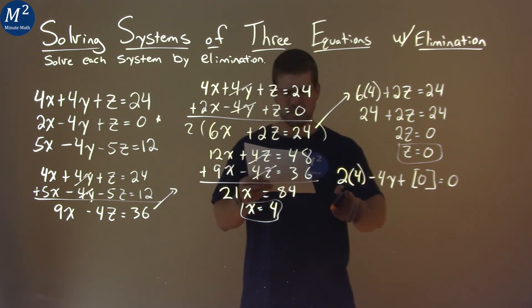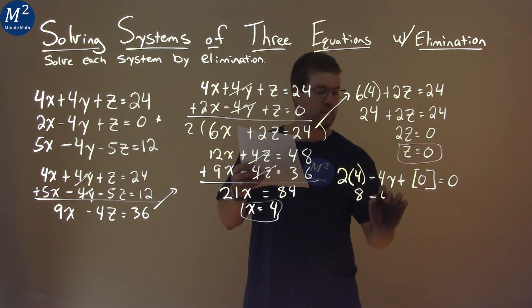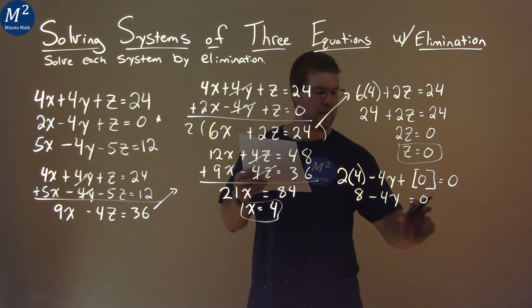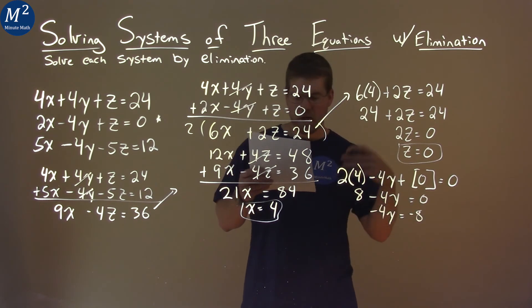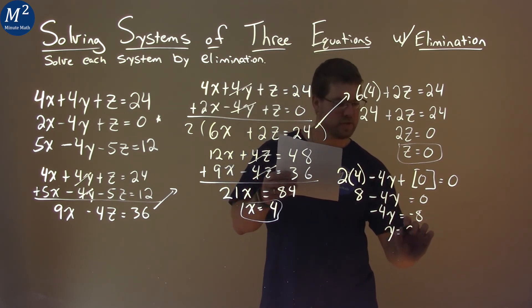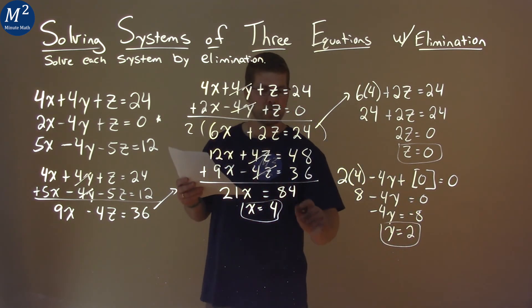Well, not too bad. 2 times 4 is 8 minus 4y equals 0. Subtracting 8 to both sides, you have negative 4y equals negative 8. Divide both sides by negative 4 and y equals positive 2. And so we have our y value now, so we have everything.